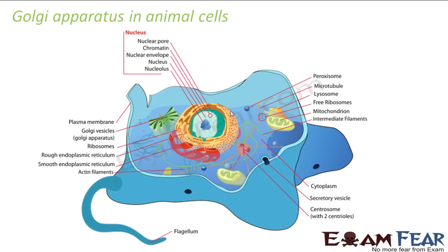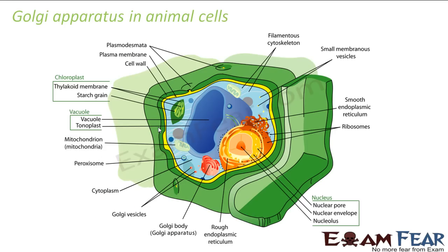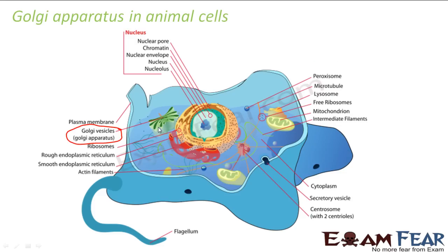In animal cells, the Golgi vesicles are arranged in parallel stacks in the middle. The Golgi apparatus is located near the nucleus, with the nuclear membrane shown as the blue line. Just outside the nucleus you have rough endoplasmic reticulum, then smooth endoplasmic reticulum, and then the Golgi apparatus — all located near the nucleus.